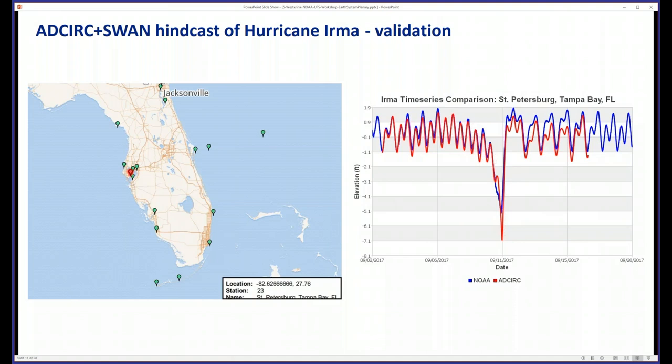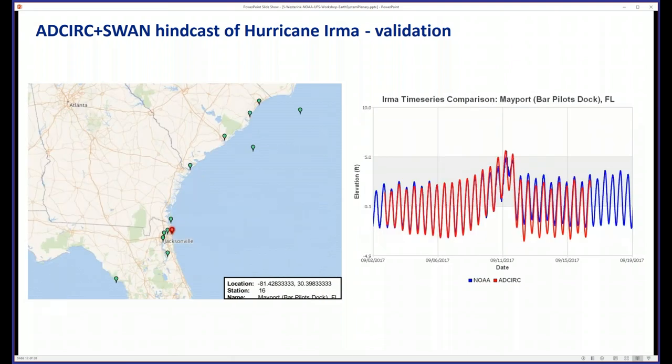Some examples in terms of hindcast Hurricane Irma — the red is ADCIRC and SWAN, which are the models we built and have been operational at NOAA for a long time. You can see a little bit of a shift after the storm passes. Irma had a lot of water being pushed away from the coast, and we have a little bit of a down-set in the mean water level. Those are actually baroclinic effects, which we'll address in part three of the talk. At the coast and inland, we're doing very well.